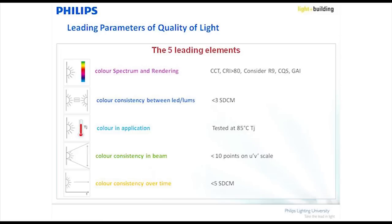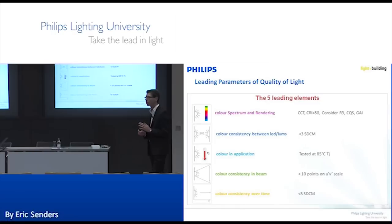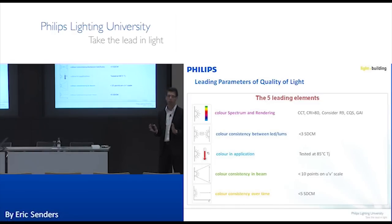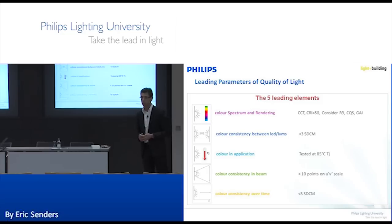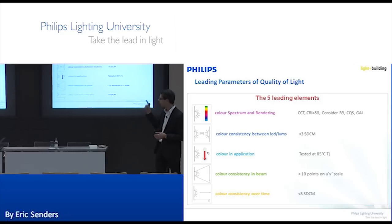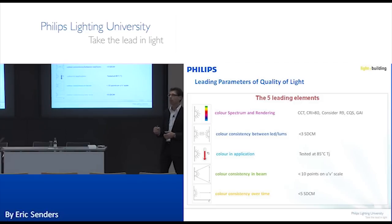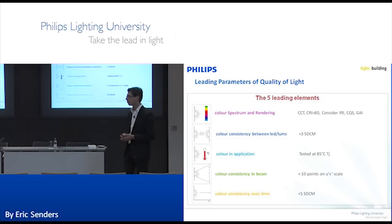The last quantitative element is color consistency over time — making sure the color shift stays within acceptable boundaries. With these quantitative measures, we've tried to set a stake in the ground for the quality of light we want to offer.